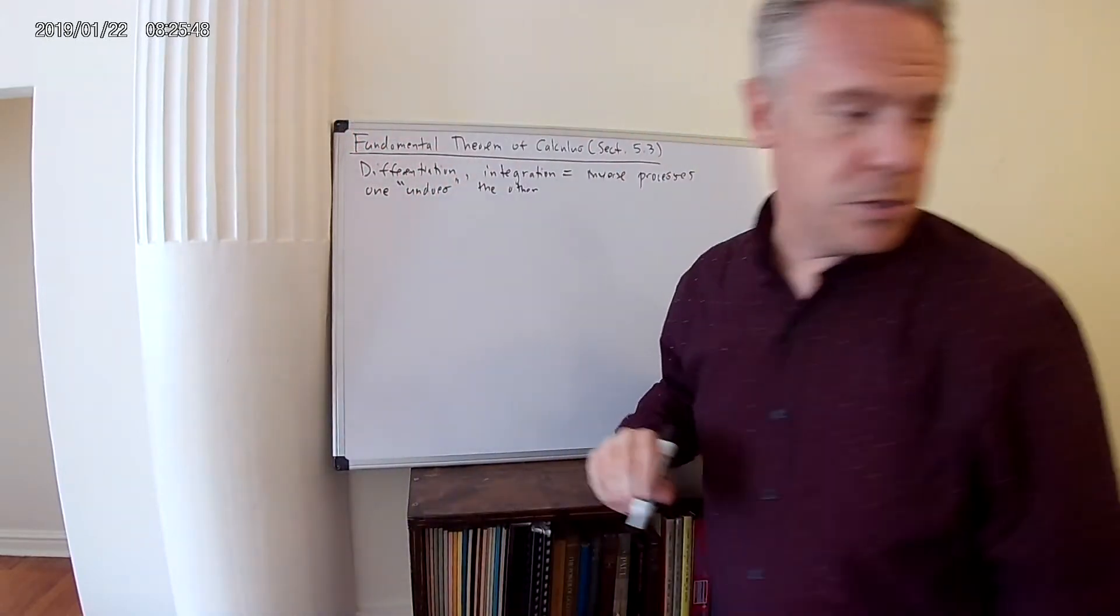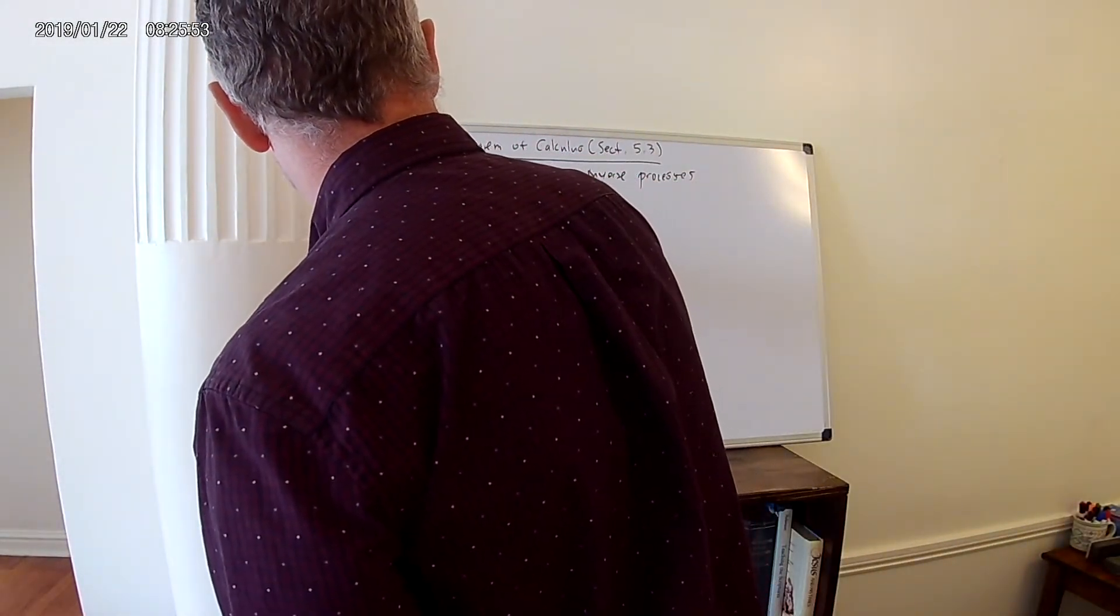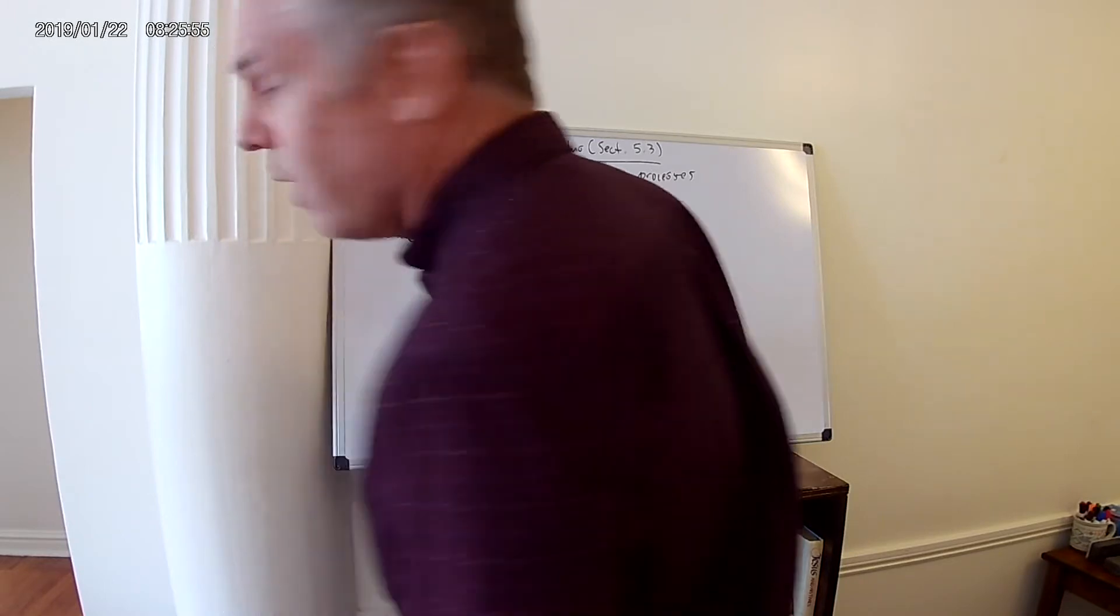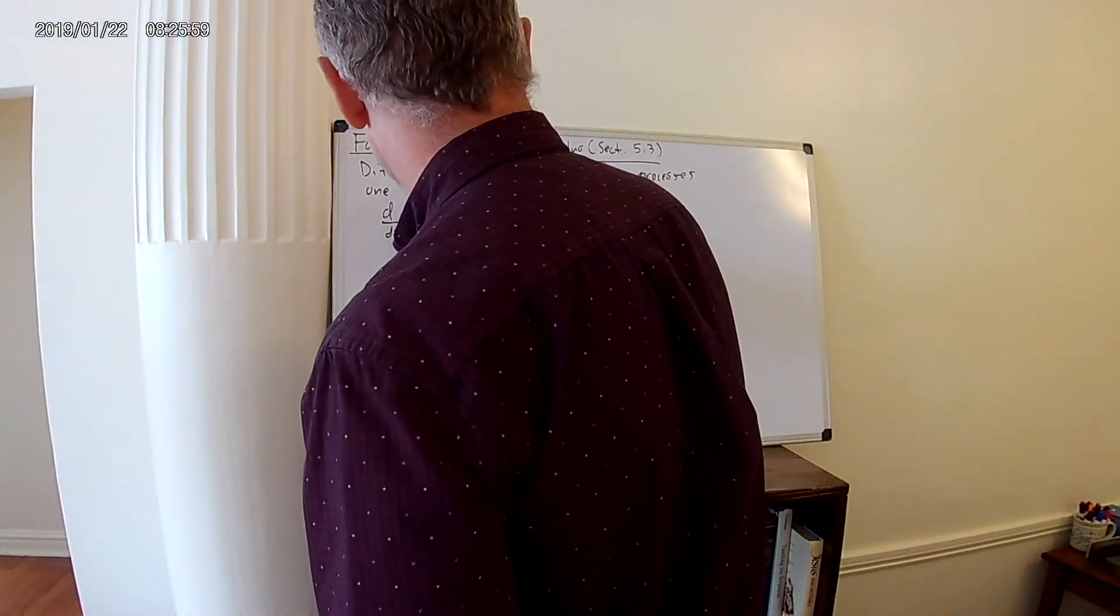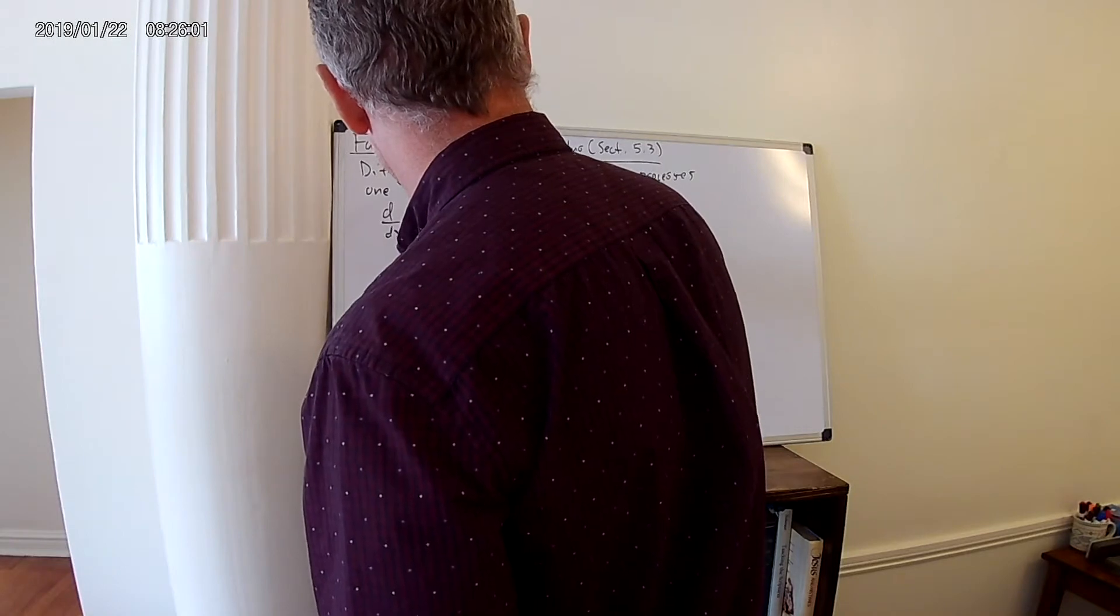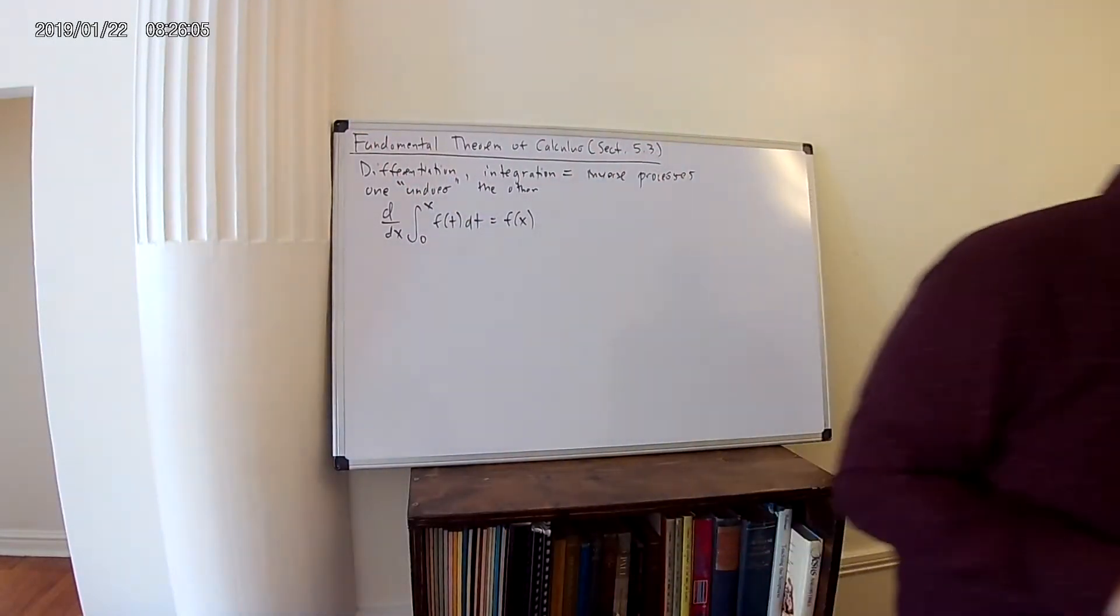In other words, if you took a derivative of an integral, the d/dx of the integral from 0 to x of f(t) dt, this would just equal f(x).